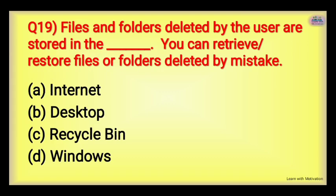Next: Files and folders deleted by the user are stored in the Dash. When you delete any file or folder, it is automatically stored in this place, and you can retry or restore the file deleted by mistake. Options: Internet, Desktop, Recycle Bin, or Windows. The right answer is Recycle Bin — it is the folder/icon in which all deleted files are stored, and you can restore them from there.